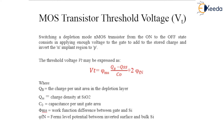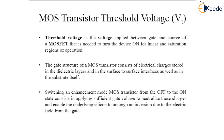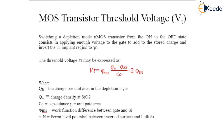Switching a depletion mode MOS from ON state to the OFF state consists of applying a negative voltage to the gate, which will add to the stored charge and invert the N-implant region to P-type.